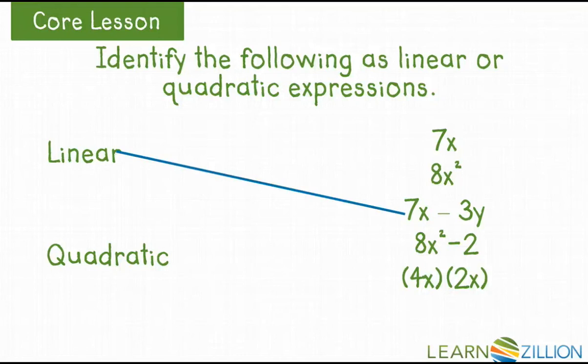Linear: 7x minus 3y. Again, it's the x and the y. They both are variables, but it's not taken to any specific power. It's just to the power of 1. And quadratic is 8x squared minus 2.